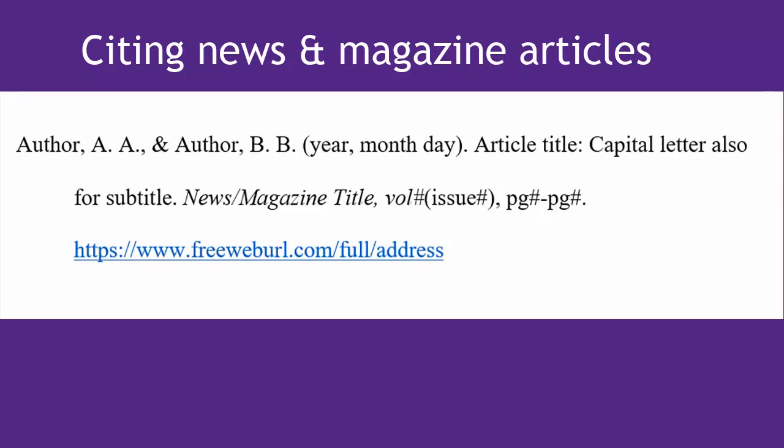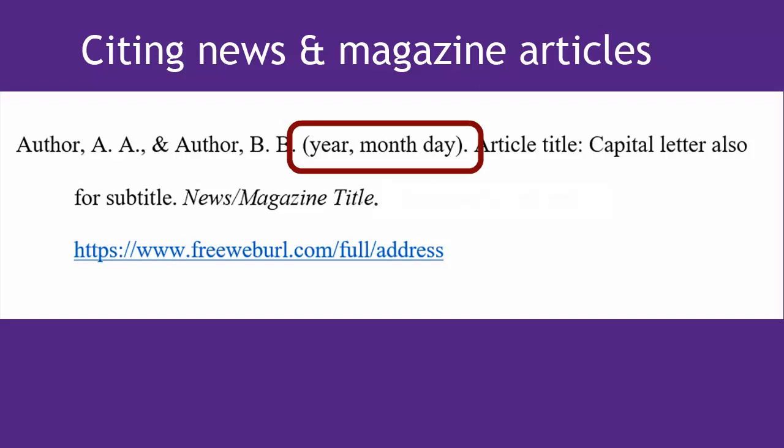If we're citing a newspaper or magazine article that is missing some of the information, like the volume, issue, or page numbers, you can simply leave that part off. The one addition for news and magazine articles is to include more of the date if they give it to you, because news is published much more frequently.